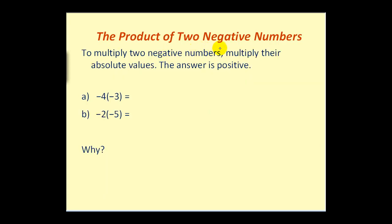Next, the product of two negative numbers. To multiply two negative numbers, we multiply their absolute values and the answer is positive. This rule is correct, but it doesn't really justify why a negative times a negative is a positive. So let's look at two examples: negative 4 times negative 3 would be positive 12, and negative 2 times negative 5 would be positive 10.